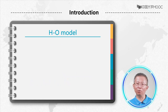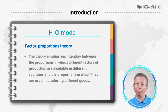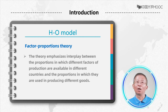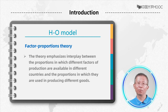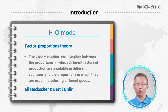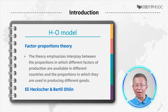This is one of the most influential theories in international trade, often referred to as the H-O model, also known as factor proportion theory. The theory emphasizes the interplay between the proportions in which different factors of production are available in different countries and the proportions in which they are used in producing different goods. The model was developed by two Swedish economists, Erling Heckscher and Bertil Olin. Heckscher was the teacher of Olin, and Olin received the Nobel Prize in Economics in 1977.